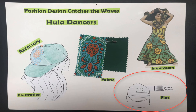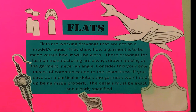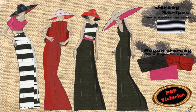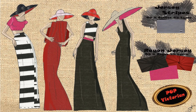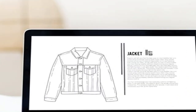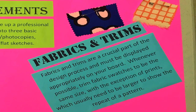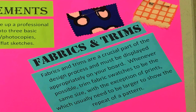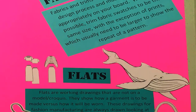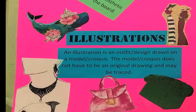Then you need a flat. A flat is a way to explain how your design will be made. The illustration makes it look pretty — you're just getting the idea out. The flat shows a manufacturer or seamstress how it would be made: where there's a seam, where the button is, where the zipper is. The flat is usually just the clothing item by itself, while the illustration is on a body.